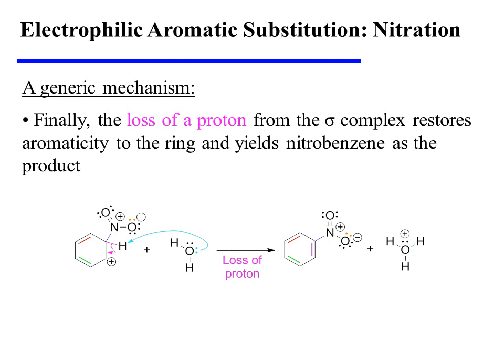In the last step of the mechanism, a proton is lost from the only ring carbon that is sp3 hybridized. As that proton is lost, the carbon-hydrogen sigma bonding electrons collapse towards the cation to form a new pi bond and to restore aromaticity to the ring. In this EAS reaction, water can serve as a base to remove that proton, and the result is nitrobenzene as our final product.